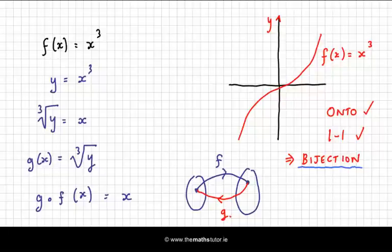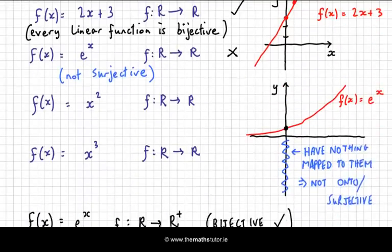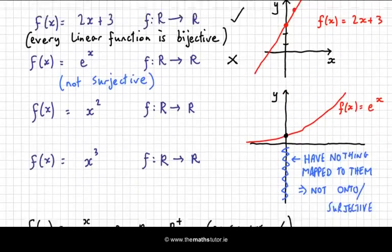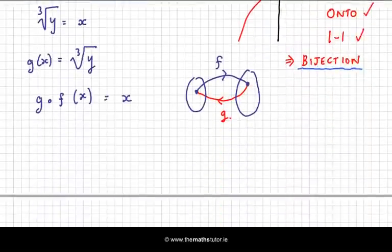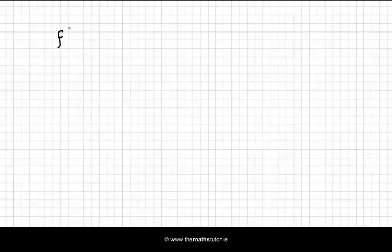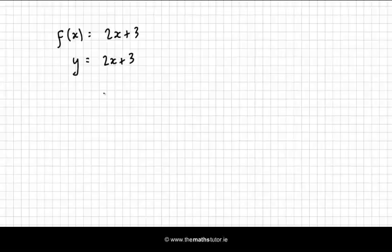Now, the other function that we looked at was f of x equal to 2x plus 3. So let's find its inverse. Again, write it in terms of y. Rearrange to get x in terms of y and we get y minus 3 is equal to 2x. So x is equal to y minus 3 over 2.